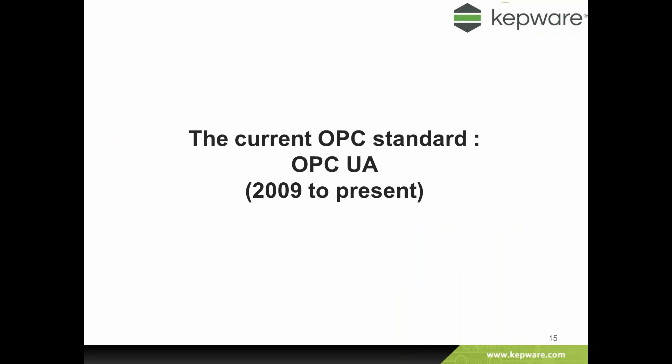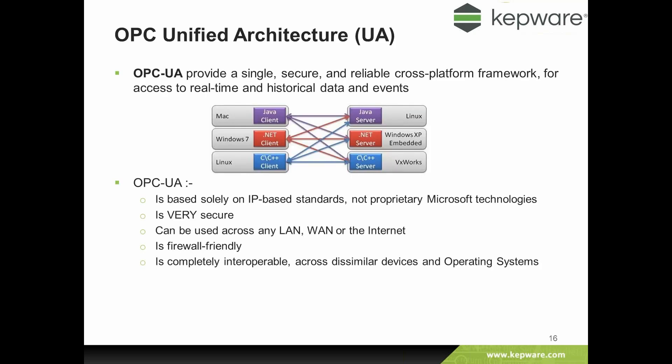The current OPC standard is OPC UA, which was launched in 2009 and is still the present standard. It is a completely different model from OPC DA. It's based upon normal rules of networking — connections are between IP addresses, not based upon Microsoft proprietary technologies. It's very secure, can be used between any two PCs with IP addresses across any type of LAN or WAN, or even across the internet. It's very firewall-friendly and can run on different operating systems such as Apple Macs or Linux, making it far more flexible and suited to today's requirements.